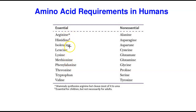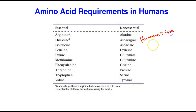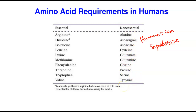The essential amino acids — those you must get from the diet — are histidine, isoleucine, leucine, lysine, methionine, phenylalanine, threonine, tryptophan, and valine. The non-essential amino acids, which humans can synthesize, include alanine, asparagine, aspartate, cysteine, glutamate, glutamine, glycine, proline, serine, and tyrosine. We saw the synthesis of these in the first part of this lecture.